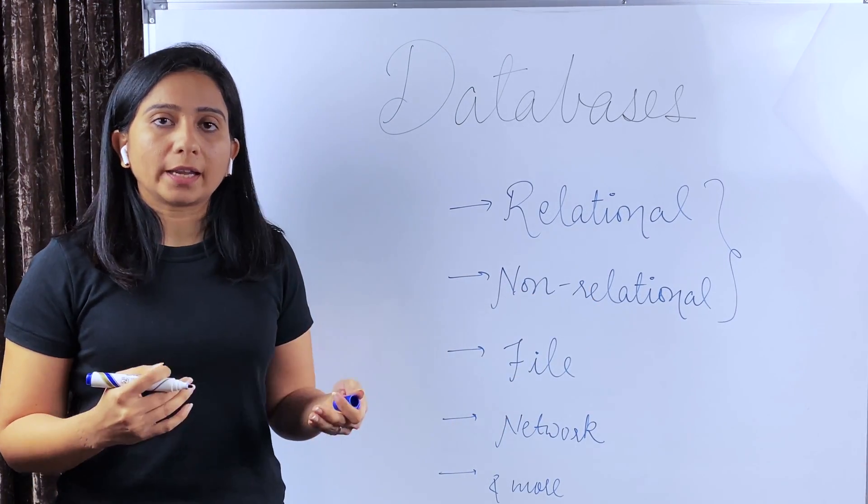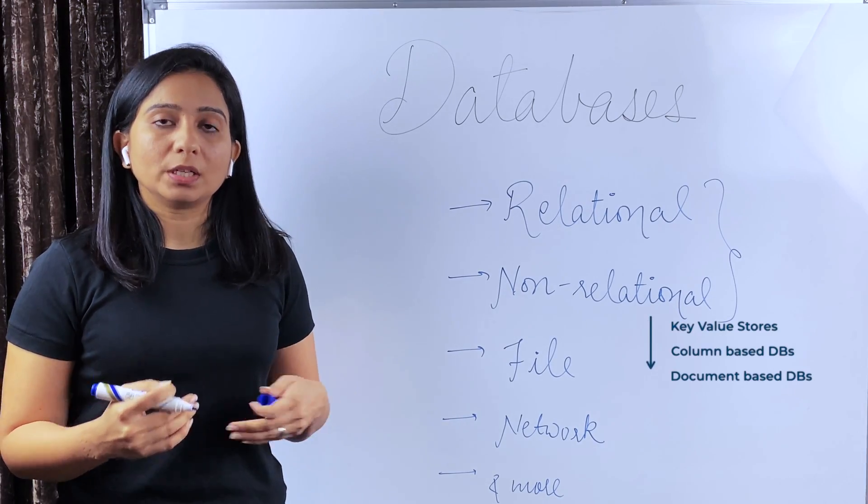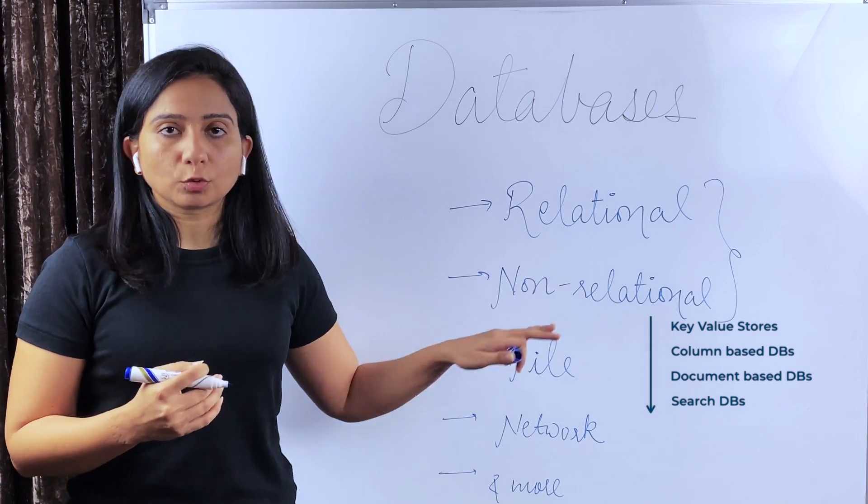Non-relational DBs are again divided into multiple types like key value stores, column-based DBs, document-based DBs, search DBs, etc. So we will look into those examples as well.